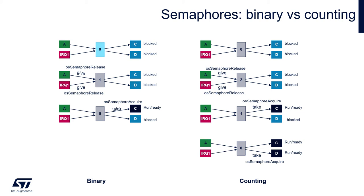Task A and IRQ1 both give the semaphore, so in the second picture on the right it can be taken two times — an ideal situation for both task C and task D waiting for it. In the third picture, task D acquires the semaphore and the counter decreases by one. In the fourth picture, task C acquires the remaining semaphore, and the counter reaches zero, meaning it cannot be taken again until released by task A or IRQ1.